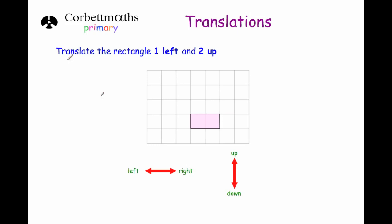Hi and welcome to this Corporate Maths primary video on translations. A translation is where a shape is moved or slid so many squares to the left or right and then so many squares up or down.